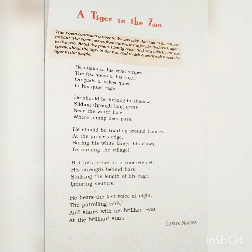So in this poem, the sad and unhappy situation of tigers has been shown, because they are confined in cages and they ignore visitors because they cannot attack them. Students, watch the video again and write down the meanings of the words I explained. Thank you.